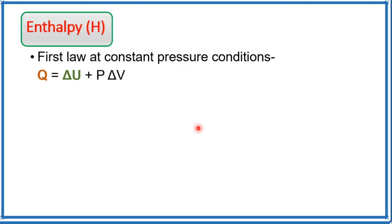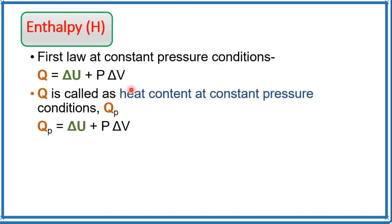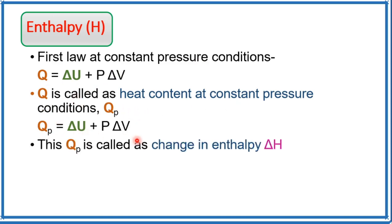Now we will move on to the concept of enthalpy, denoted by the symbol H. The first law at constant pressure conditions can be written as Q = ΔU + PΔV, and this Q at constant pressure is called the heat content at constant pressure, Q_P. So Q_P = ΔU + PΔV.